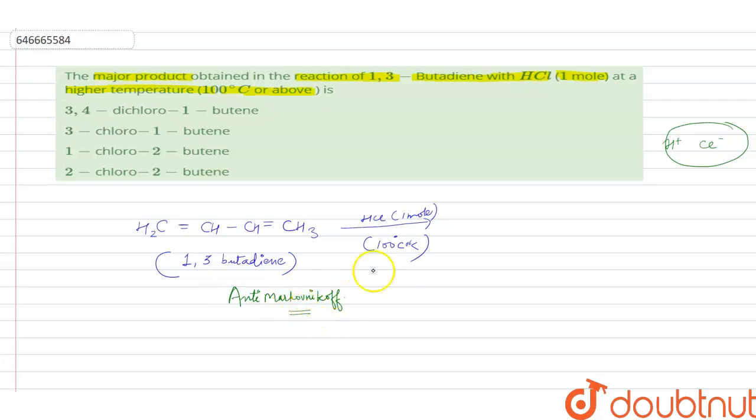So according to anti-Markovnikov rule, the positive charge species attaches to that carbon which has lower number of hydrogens.